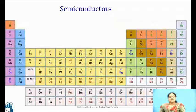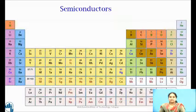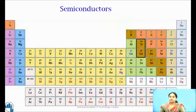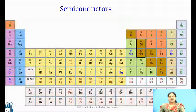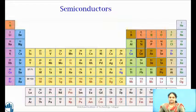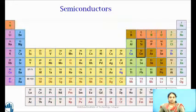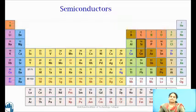Of all the elements in the periodic table, eleven elements are semiconductors. Germanium and silicon are the most widely used semiconductors in device manufacturing applications and they are known as elemental semiconductors.